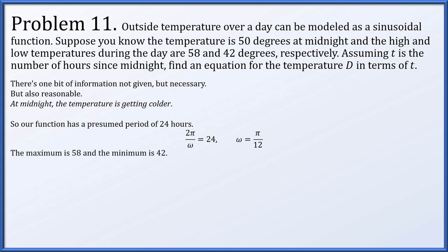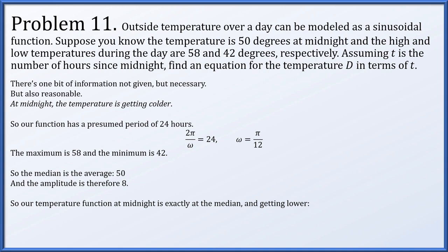The maximum is 58 and the minimum is 42. The median is their average, which is 50, and the amplitude is 8 — the distance from the median to either the max or min. The temperature at midnight is exactly at the median and decreasing, which corresponds to a negative sine function with no horizontal shift. So d equals negative 8 times the sine of pi over 12 times t, plus 50.